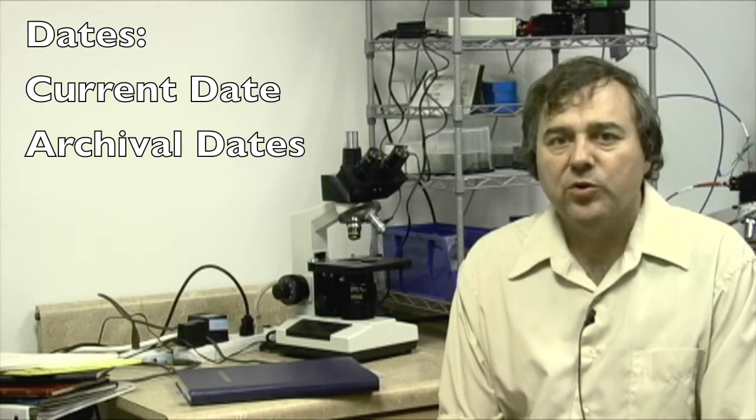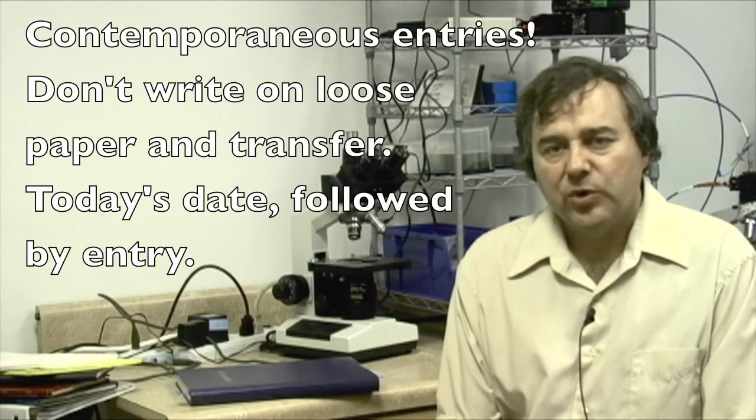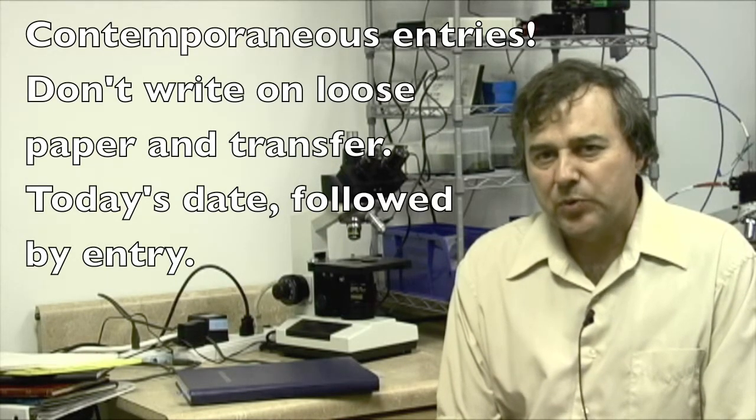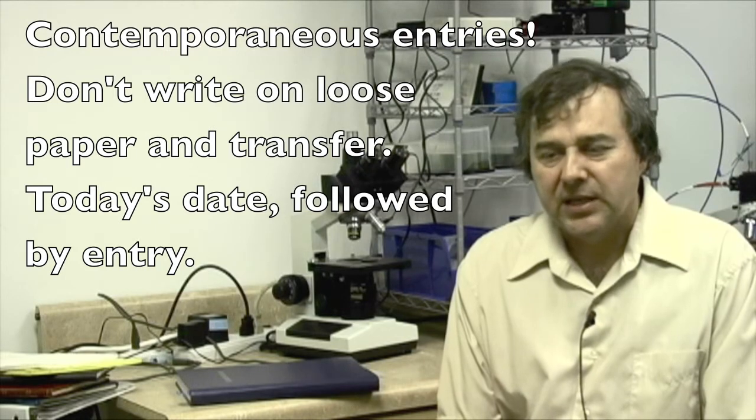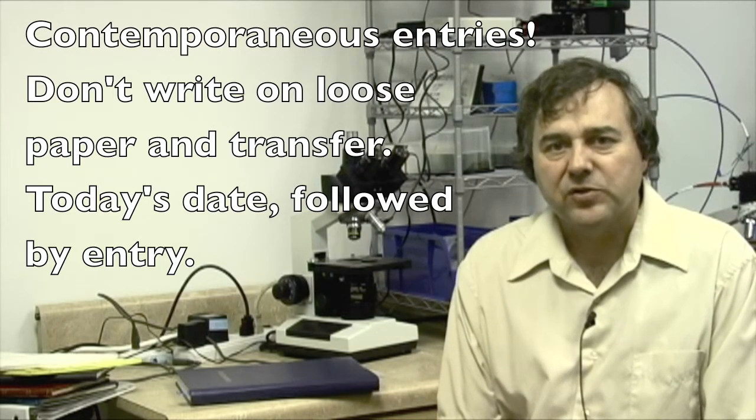Dates: The current date is for today's experiment. Before you entered anything else into it, you would write today's date. Archival dates are for continuation of experiments. Let's say the experiment took two or three days to complete. Maybe today we made buffers for the experiment, and tomorrow we actually ran the experiment.